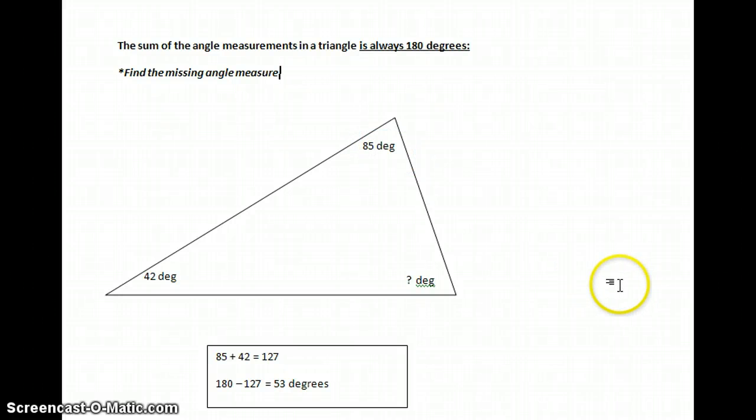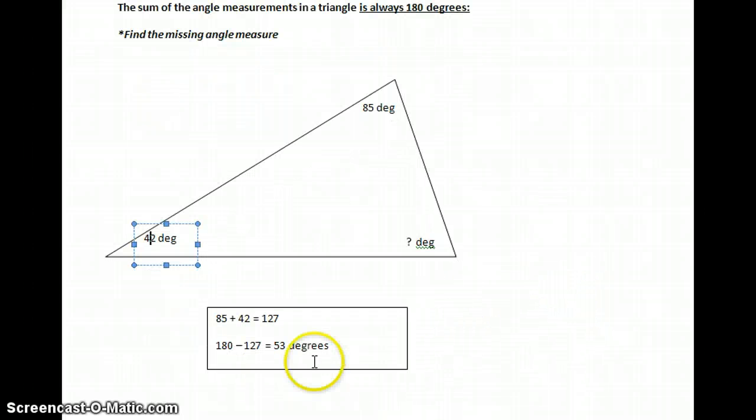We know that the whole thing must be 180. So first we add 85 and 42, we get 127. So these two angles added together are 127. Now, all we have to do is take 180 and subtract 127, and we get the missing degree measure is 53 degrees.